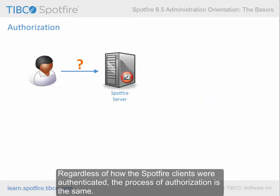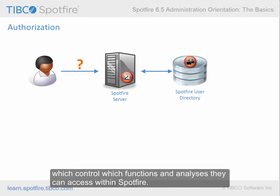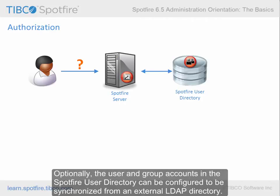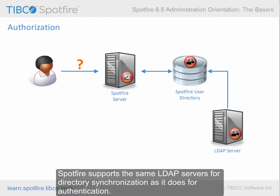Regardless of how the Spotfire clients were authenticated, the process of authorization is the same. The Spotfire server checks the Spotfire user directory to determine users' privileges, which control which functions and analyses they can access within Spotfire. Optionally, the user and group accounts in the Spotfire user directory can be configured to be synchronized from an external LDAP directory. Spotfire supports the same LDAP servers for directory synchronization as it does for authentication.